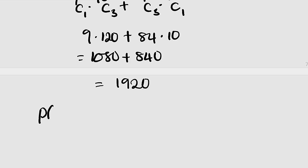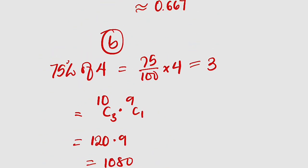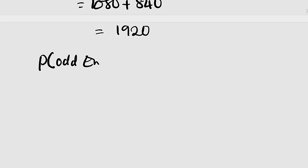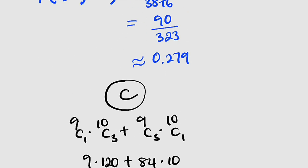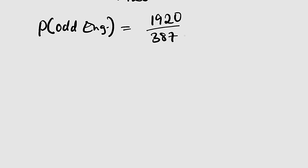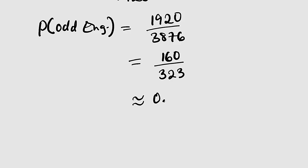Therefore, the probability of an odd number of engineers equals 1,920 divided by the sample space 3,876. In simplest form this is 160/323, and in decimal to three decimal places, 0.495.